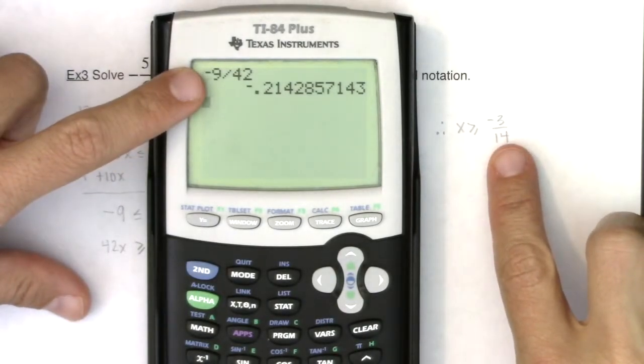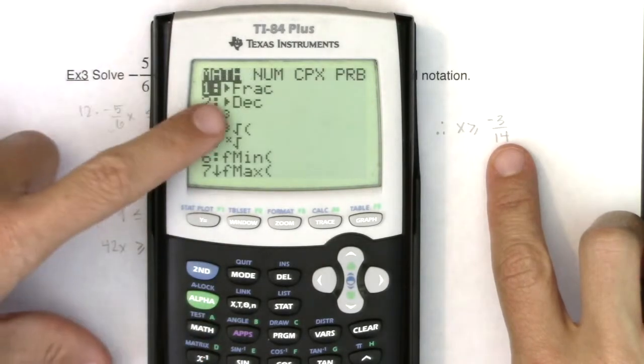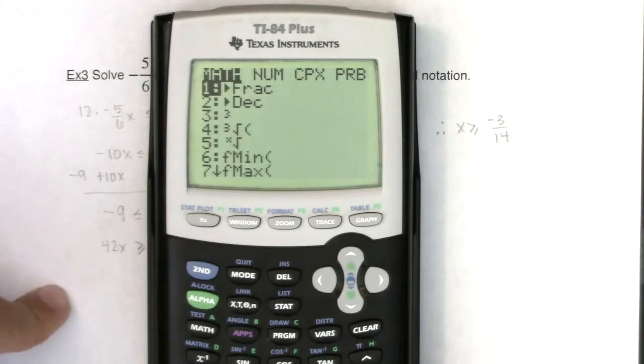Now, if you didn't notice that you could simplify it, no problem. If you hit your math key, which is underneath this alpha, hit math. And then this first option here says convert it to a fraction. So I'm going to hit enter, or you can type in the number one, but hit enter.